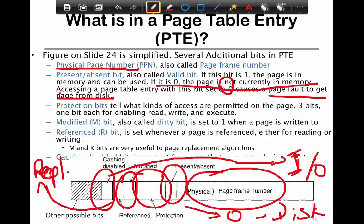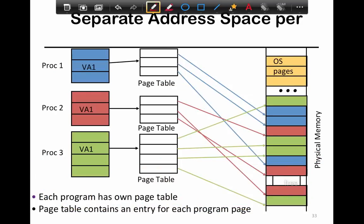So each process - I've shown you three processes: blue, red, and green - each process has its own page table. Remember this: each process has its own page table, and each entry is possibly 64 bits or so, eight bytes.